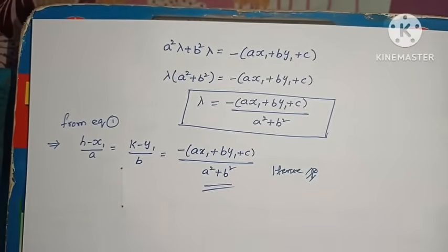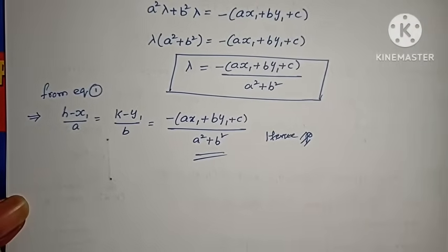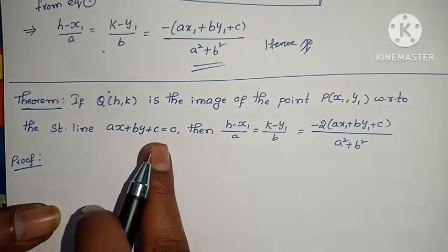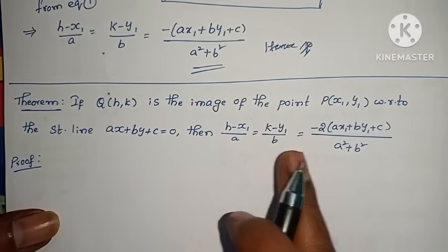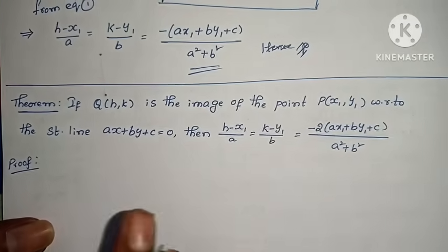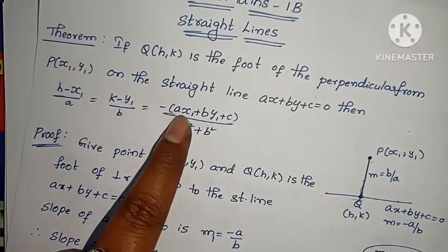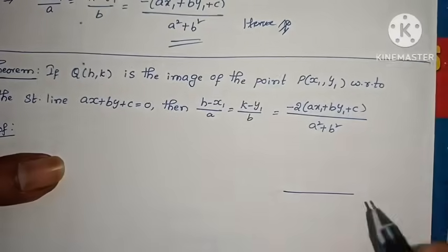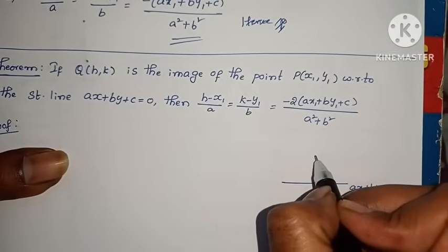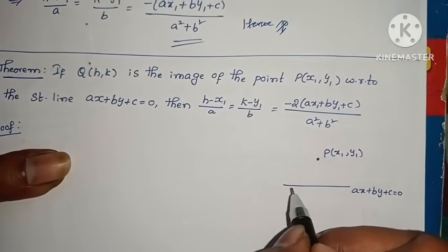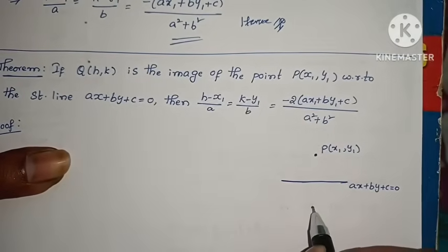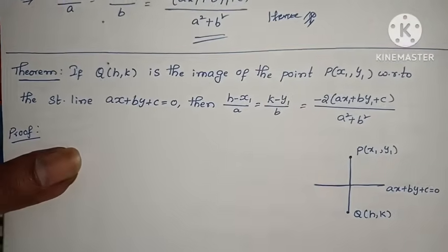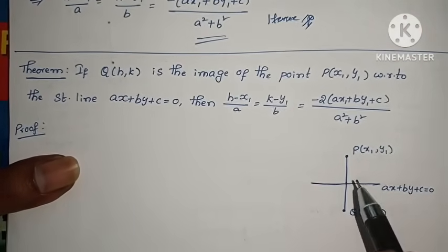Now the second theorem — the image theorem: If Q(h, k) is the image of the point P(x₁, y₁) with respect to the straight line ax plus by plus c equals to 0, then (h minus x₁) by a equals (k minus y₁) by b equals minus 2 into (ax₁ plus by₁ plus c) by (a² plus b²). The difference from the first theorem is: here it is minus 2, whereas in the foot of the perpendicular it was just minus 1.